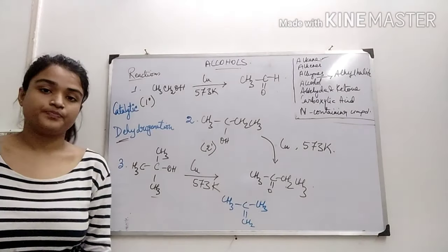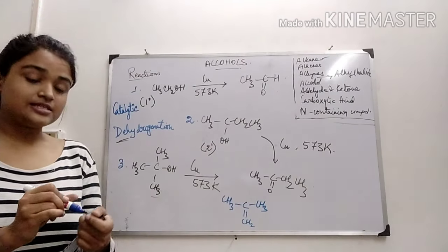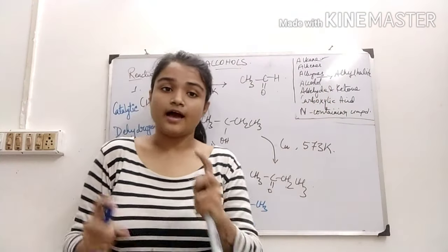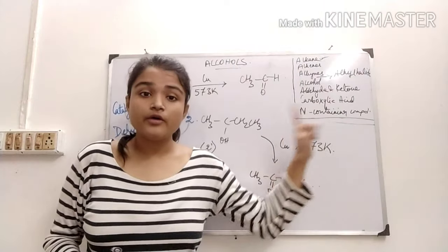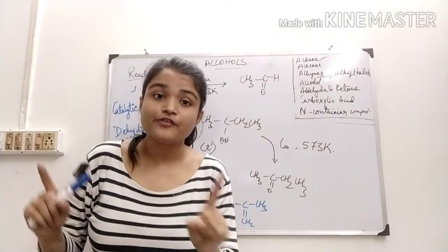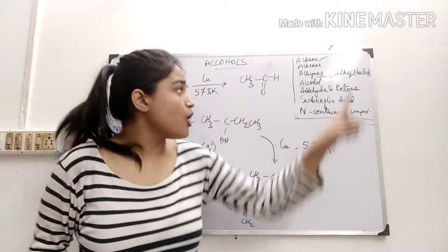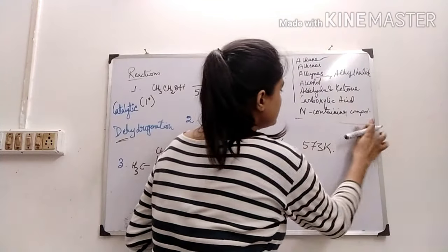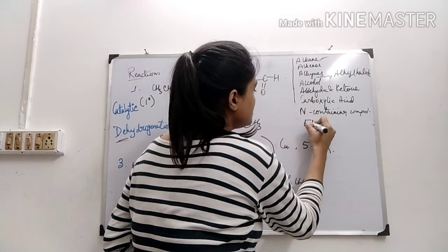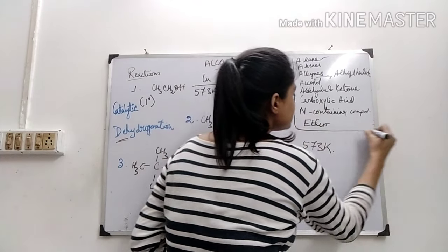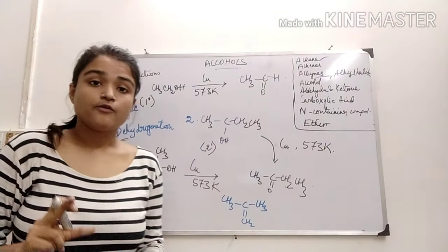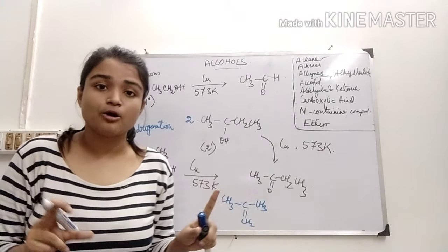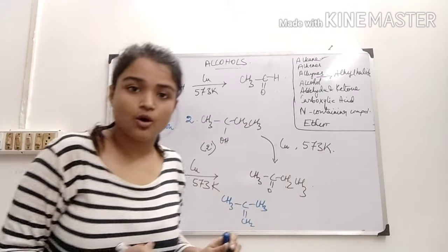This is what we form. So this is how we can convert an alcohol to aldehyde, ketones, and acids. One more reaction where another functional group can be achieved from alcohol, and that is ether. Ether is another functional group which can be obtained from alcohols. Let's see how we can obtain ether from alcohols.